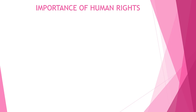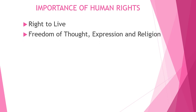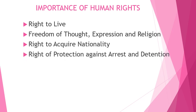Now we are going to see the basic general importance of human rights. What are the main basic importance of human rights? There are five categories under the importance of human rights: the first one is right to live; next, freedom of thought, expression and religion; right to acquire nationality; right of protection against arrest and detention; and right to education.